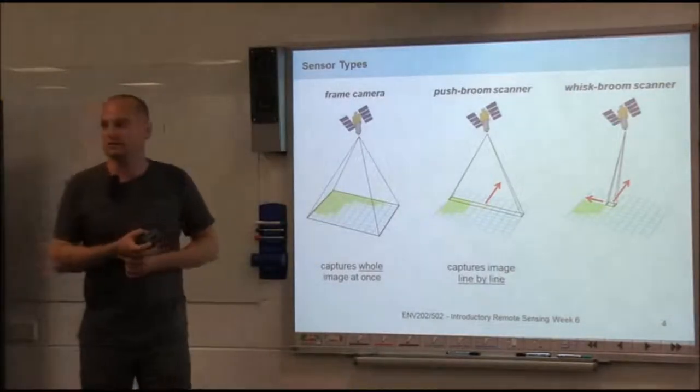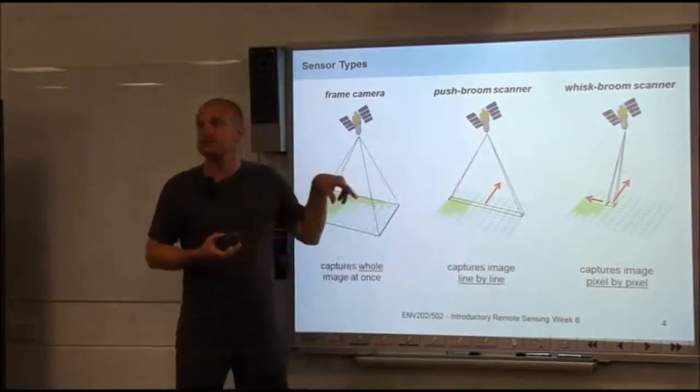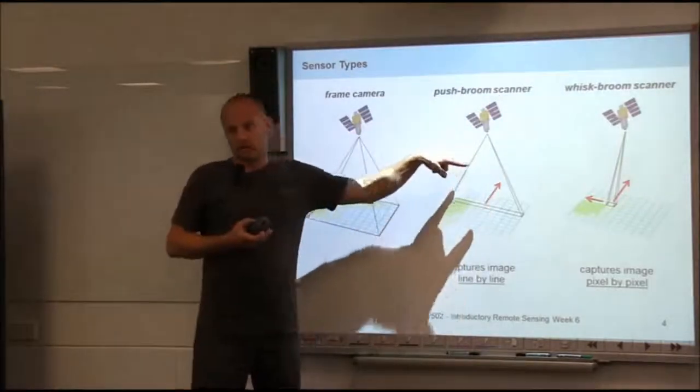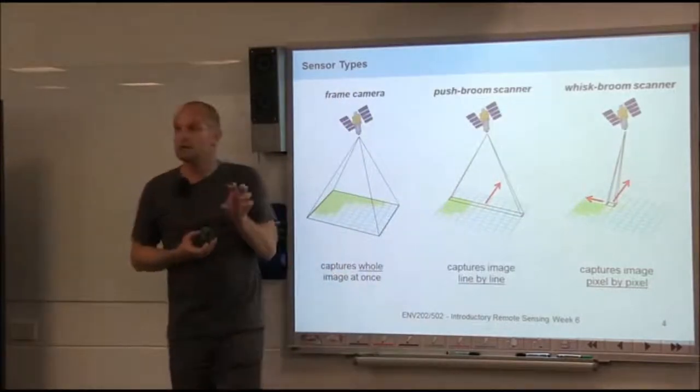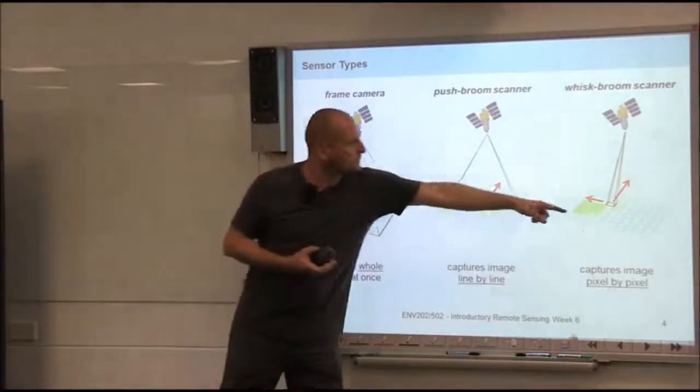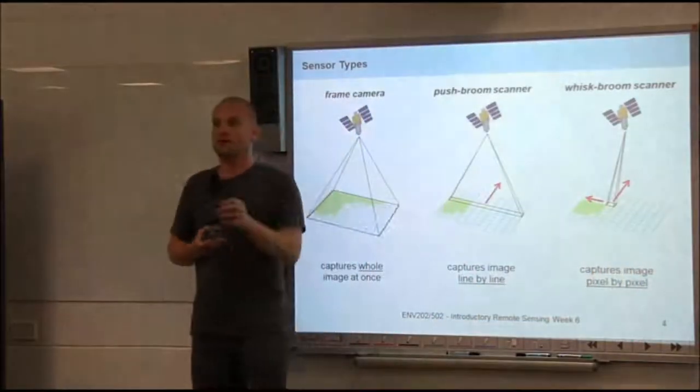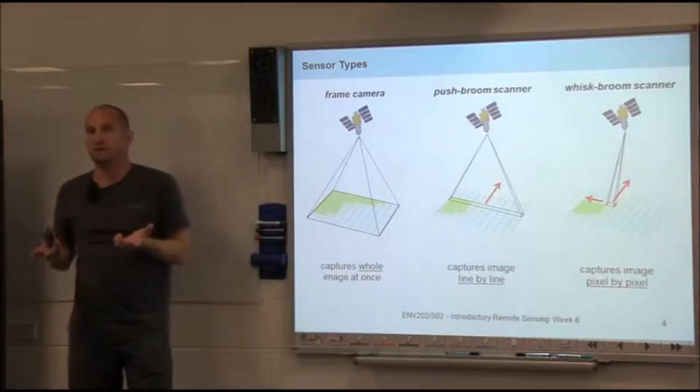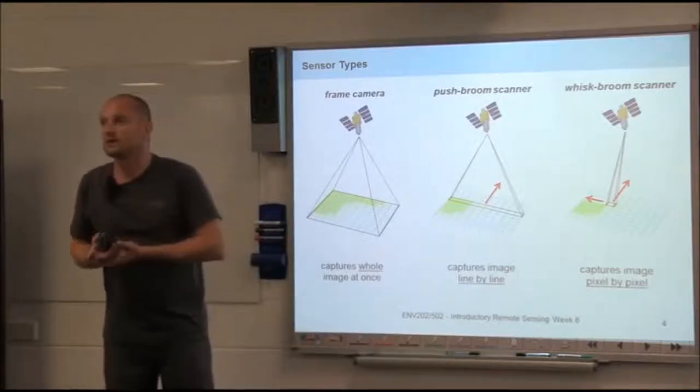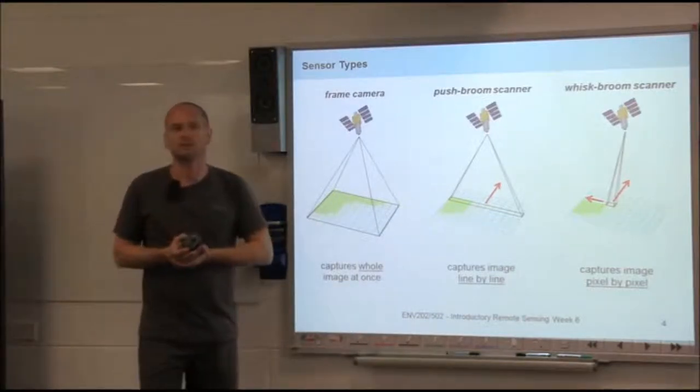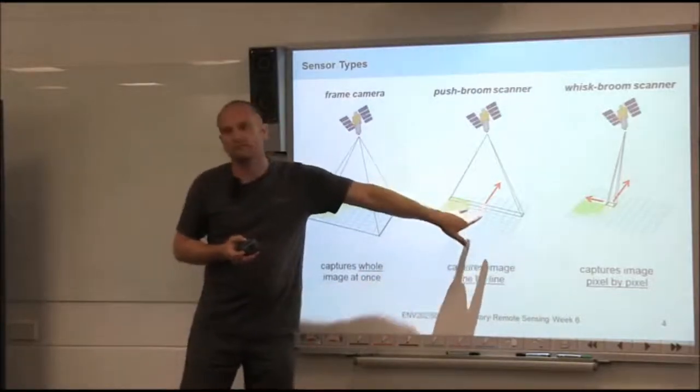I'm only aware of one satellite sensor that has a frame camera setup, and it's called Polder. To capture the whole image with push-broom, the sensor moves along. For whisk-broom, it needs a mirror that sweeps across. That's actually one disadvantage—you have to have something mechanical that's moving, and everything mechanical can wear out. On a plane that's not such a drama, but on a satellite, that's a serious issue.